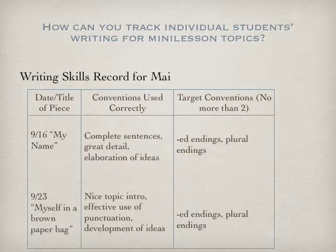So you're probably wondering how you can track individual students' writing for mini-lesson topics. Here's an example of a writing skills record from Mai — she's the student whose website page we looked at a couple weeks ago in terms of spelling. This is a writing skills record from when Mai was my student. You can see that I track a couple of different things over time for her. First, I have the date and the title of the piece. I also document what she's doing correctly in her writing — things like writing in complete sentences, including detail, and elaborating her ideas.